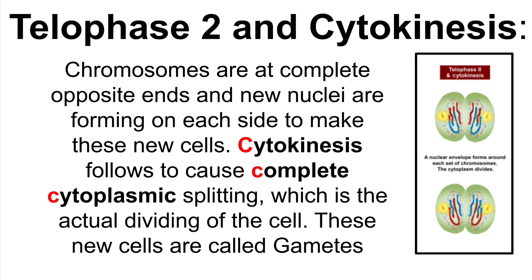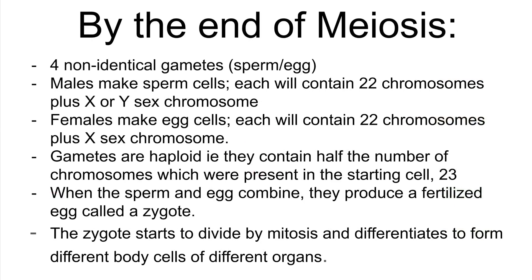These new cells are called gametes. By the end of meiosis, we have four non-identical gametes, which will either be sperm or eggs. The males make sperm cells, which each contain 22 chromosomes and an X or Y sex chromosome. The females make egg cells, which each contain 22 chromosomes plus an X sex chromosome. Gametes are haploid, which means they contain half the number of chromosomes — 23 chromosomes. When the sperm and egg combine, they produce a fertilized egg called a zygote. The zygote starts to divide by mitosis and differentiates to form different body cells of different organs.